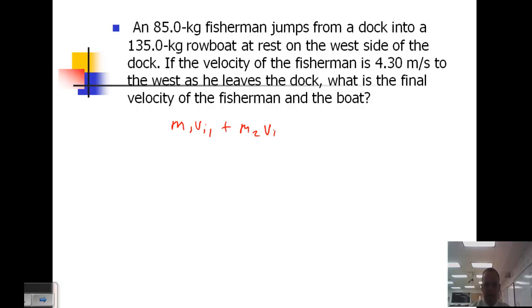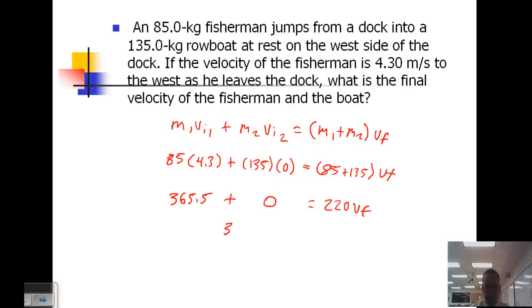m₁V_initial1 plus m₂V_initial2 - they stick together and move together, so we'll do inelastic collision. So 85 times 4.3 plus 135 times 0 equals (85 plus 135) times V_final. So the total mass is 220. This is 0, and this is 365.5. So 365.5 equals 220 V_final. Divide by 220, and we get 1.66 meters per second.